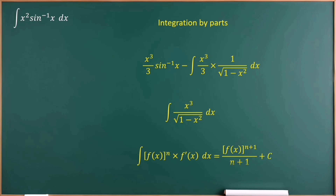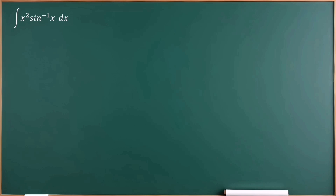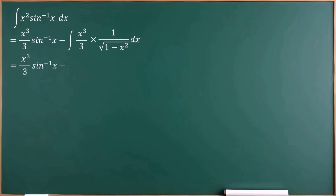Let's jump into the question. We can use the integration by parts method. The integral of x squared gives us x cubed over 3, and we write the sin inverse x term as it is. Minus the integral of x cubed over 3 times the differentiation of sin inverse x, which equals 1 over root 1 minus x squared. The denominator value 3 is a constant, so we bring 1 over 3 outside the integral. Then we have x cubed over 3 times sin inverse x, minus 1 over 3 times the integral of x cubed over root 1 minus x squared.